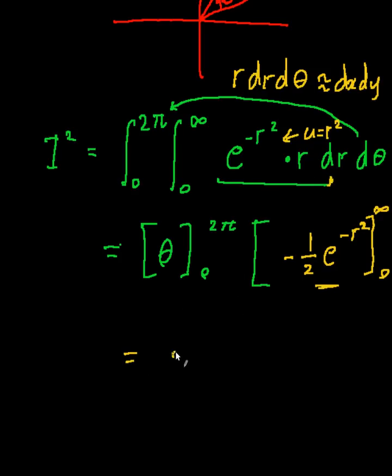Okay, so this guy over here is just going to be 2 pi, and this guy over here, so when you sub in infinity, it's going to be 0, and when you sub in 0, it'll be equal to a half, so times a half. Okay, so I squared is equal to pi.